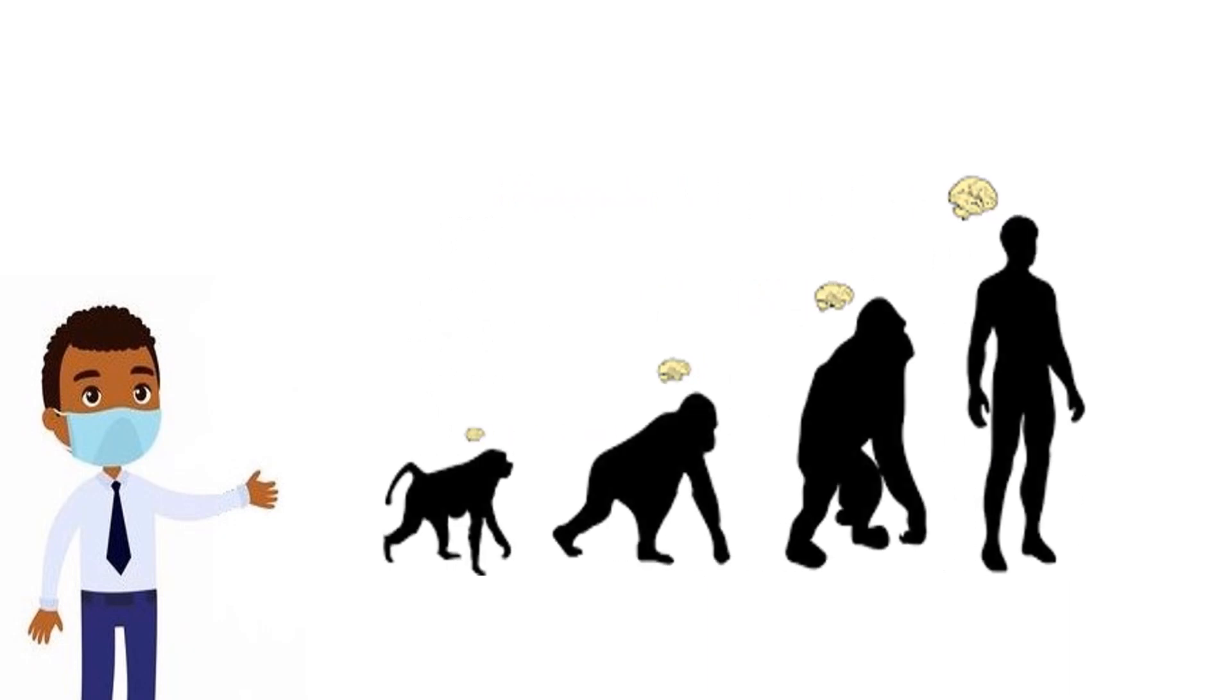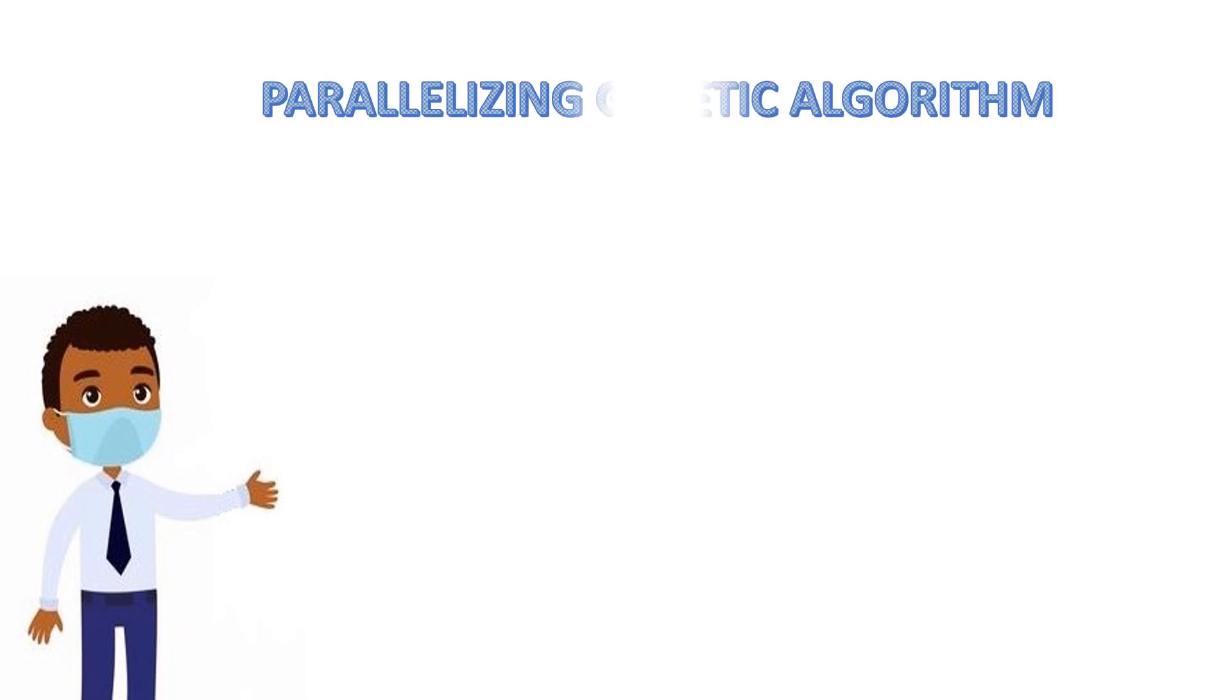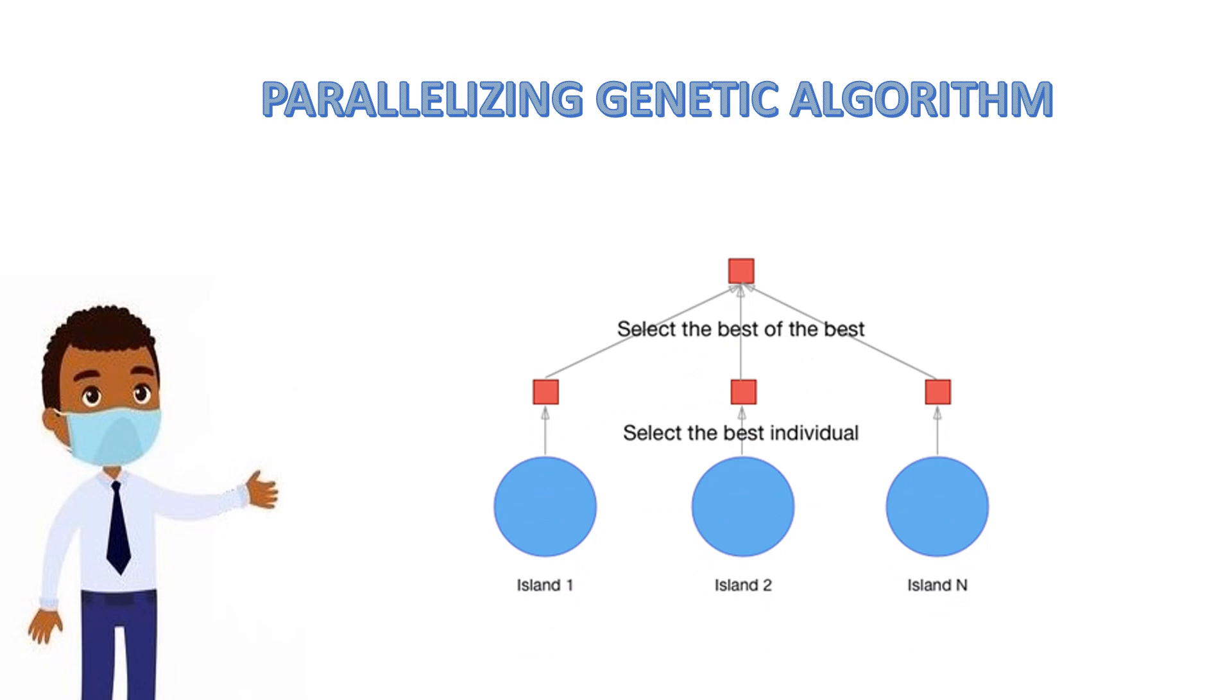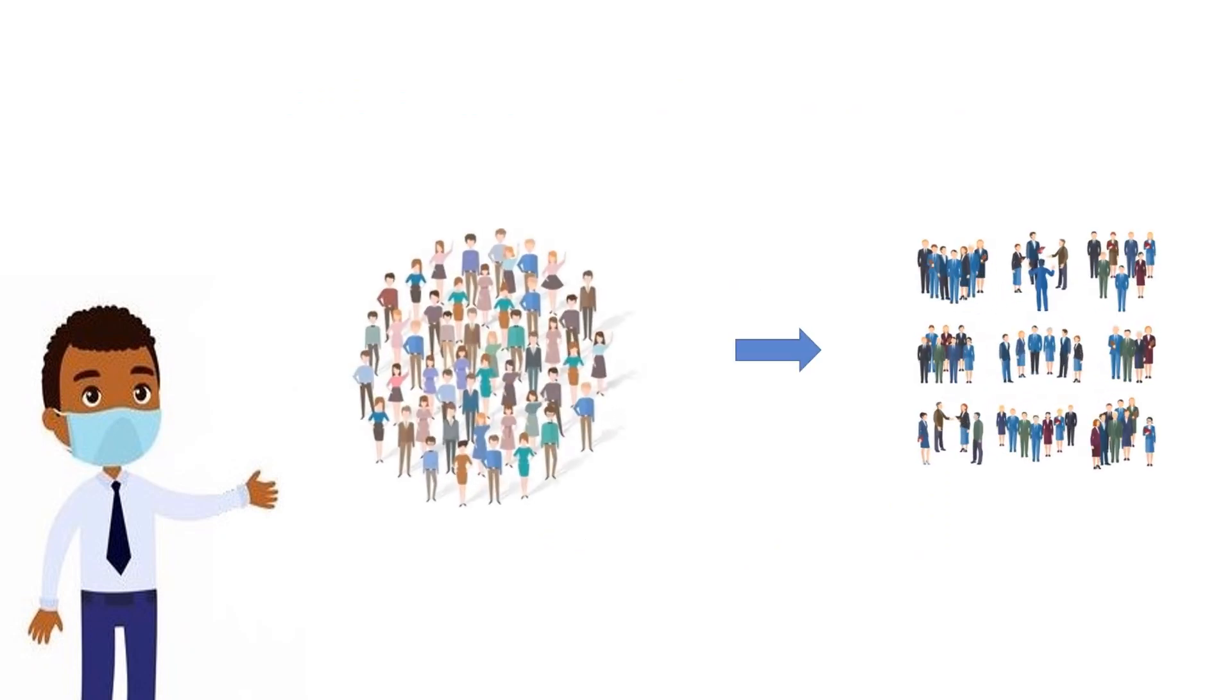There are several attempts to develop computational models to study the Baldwin effect. The next topic is parallelizing genetic algorithms. These algorithms are suitable for parallel implementation and various approaches of parallelization.